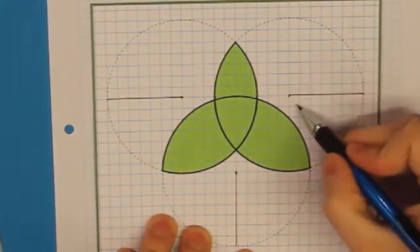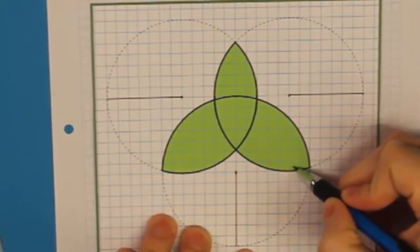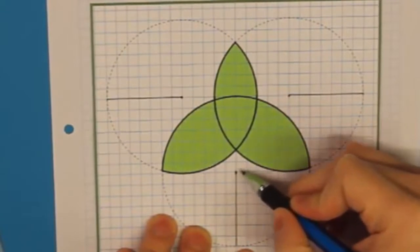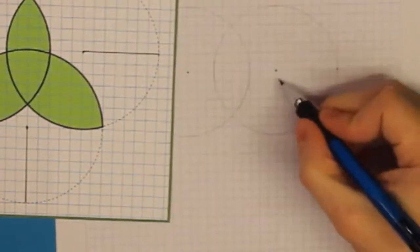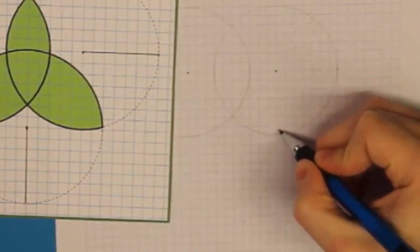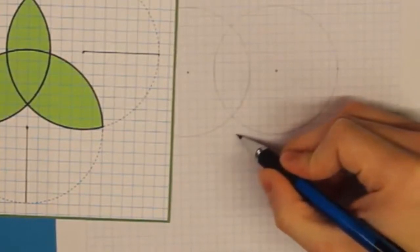Von dort muss ich also eins, zwei, drei, vier, fünf, sechs, sieben Kästchen nach unten zählen. Und danach noch eins, zwei, drei, vier, fünf, sechs Kästchen nach links. Da sind wir genau beim Mittelpunkt. Machen wir das also auch gleich bei der Zeichnung. Wir beginnen hier beim rechten Mittelpunkt, zählen sieben Kästchen nach unten, genau, und sechs Kästchen nach links und markieren den Mittelpunkt.